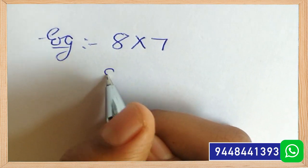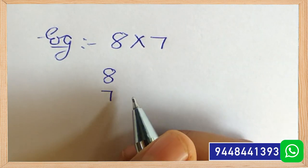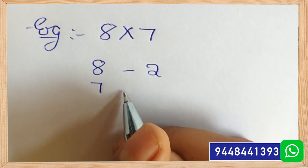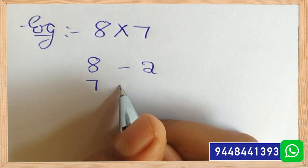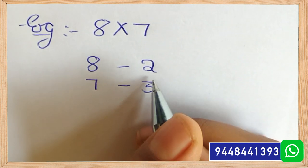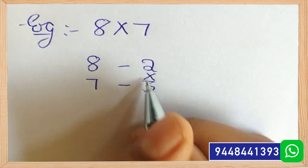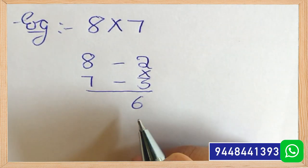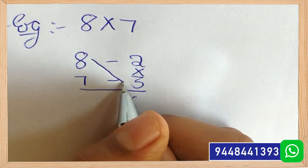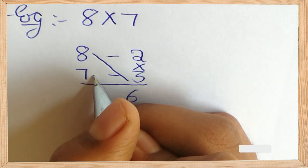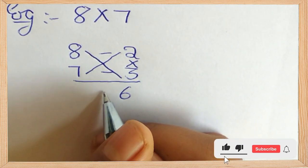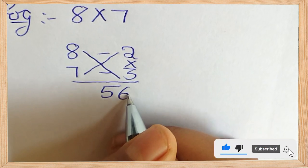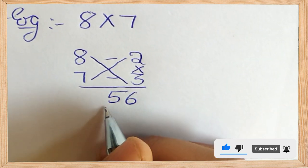First, take the difference of two digits with 10. Here, 10 minus 8 is 2, and 10 minus 7 is 3. Multiply 2 into 3, that is 6. Now, either take 8 minus 3 or 7 minus 2 — both give the same answer, that is 5. So the total answer is 56.